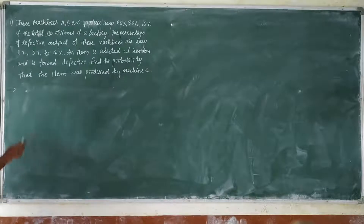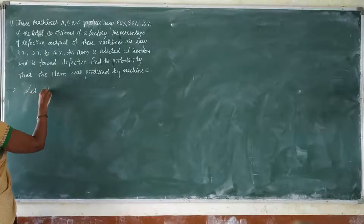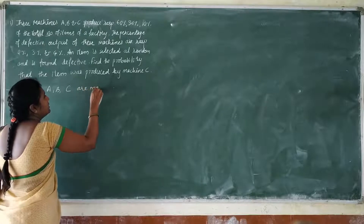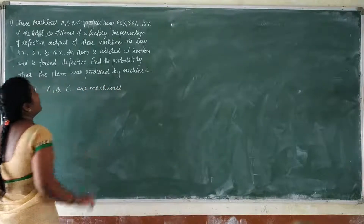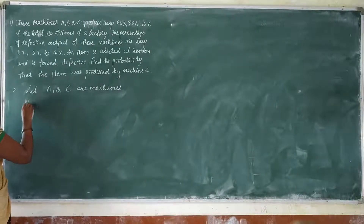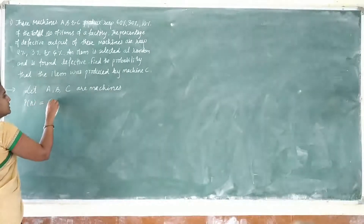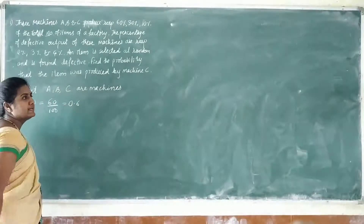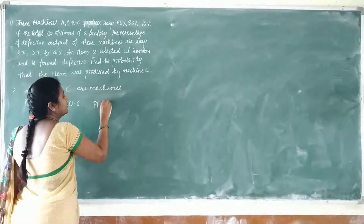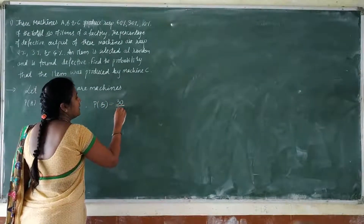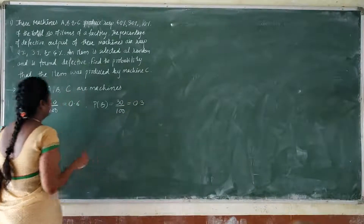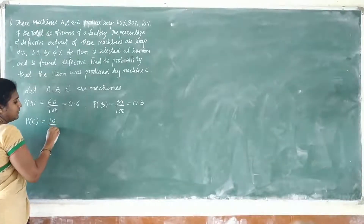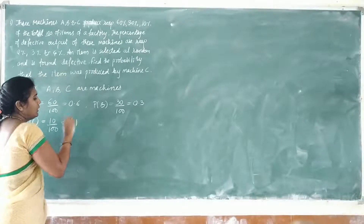Here three machines A, B, C are given. They have given the probability of each machine. Probability of A is 60%, that is 60 by 100, which equals 0.6. Next, probability of B is 30%, that is 30 by 100, which equals 0.3. Next, probability of C is 10 by 100, which equals 0.1.